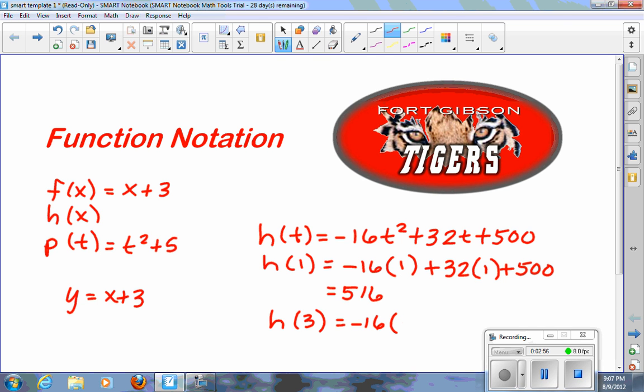Negative 16 times 3 squared is 9, plus 32 times 3, plus 500. So I just put a 3 in right there, and a 3 in right there. And if I did this right here,